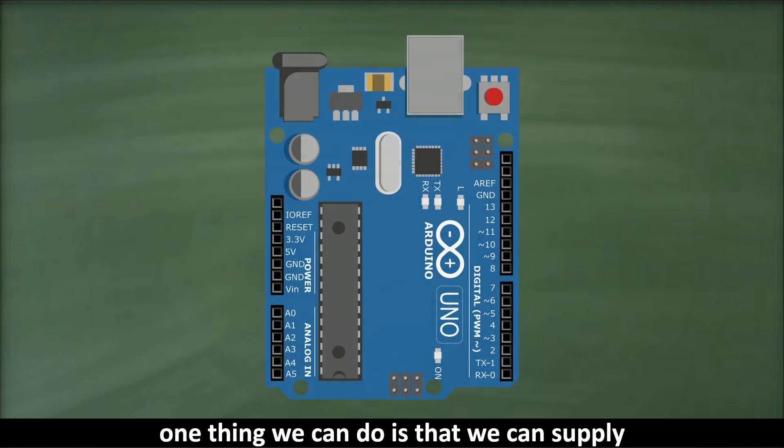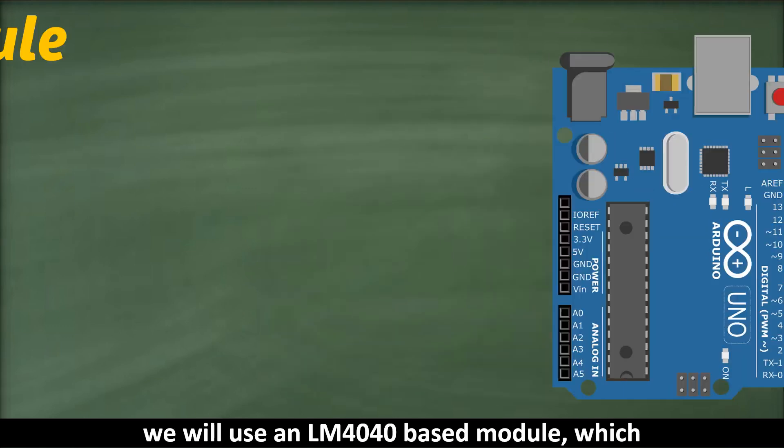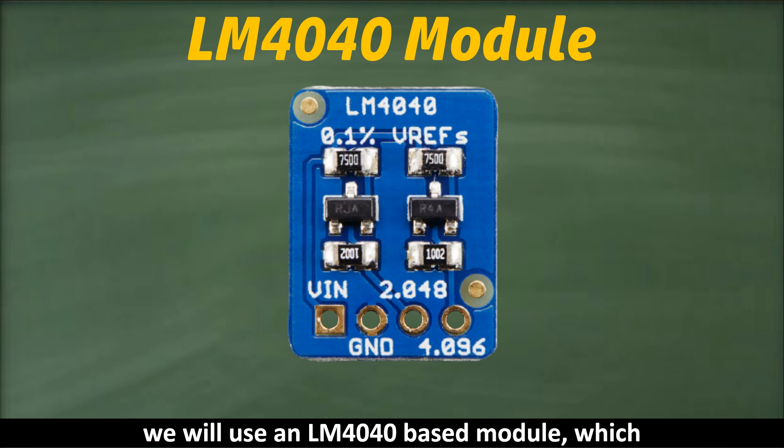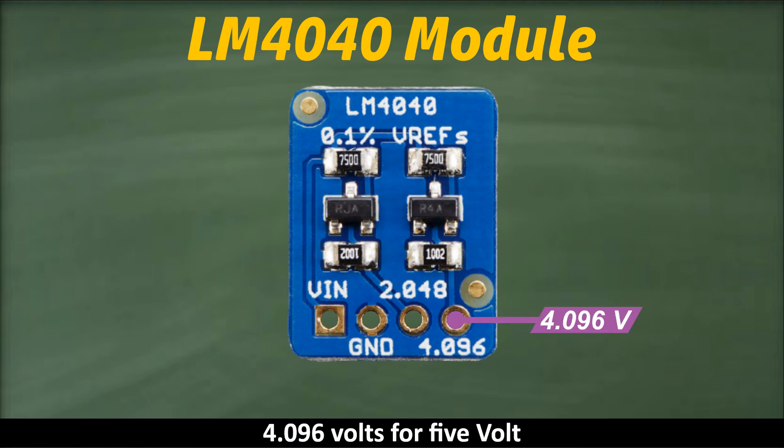one thing we can do is supply the Arduino with an external precise reference voltage for its ADC. For this, we will use an LM4040-based module, which actually contains two LM4040 ICs arranged to provide two precision outputs—4.096 volts for 5-volt microcontrollers, like the Arduino UNO, and 2.048 volts for 3.3-volt devices, like the ESP32.